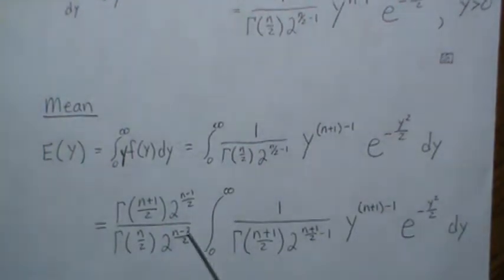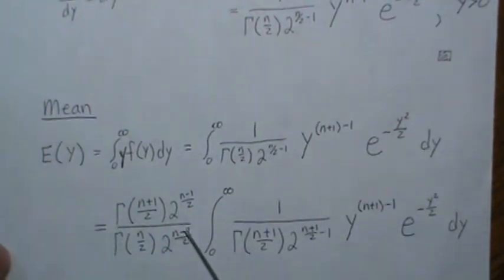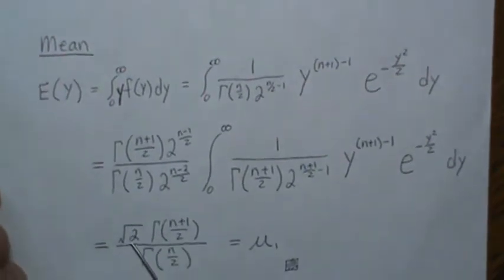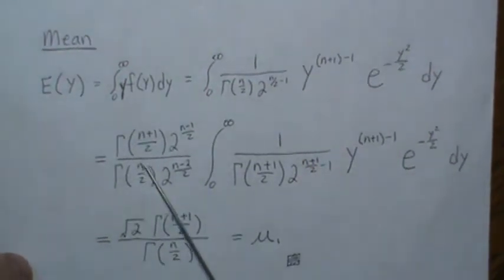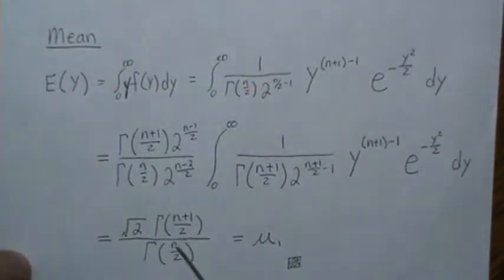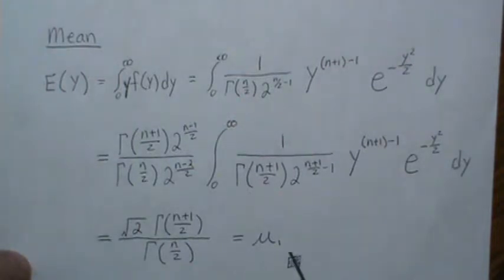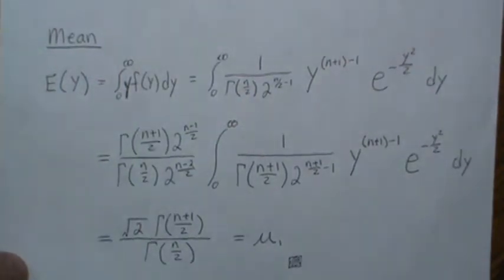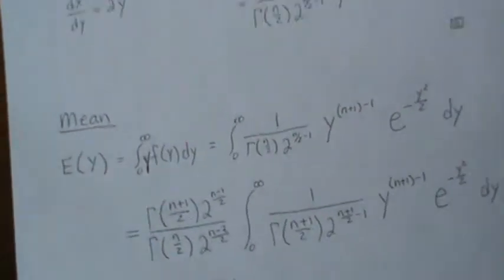Now the twos cancel to the square root of two, and the gamma functions just stay the same—there's no convenient way to reduce those. That's the mean right there of a chi distribution, and we'll call that μ₁, which we'll use later in the variance.